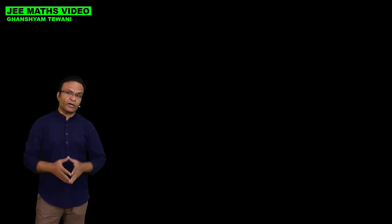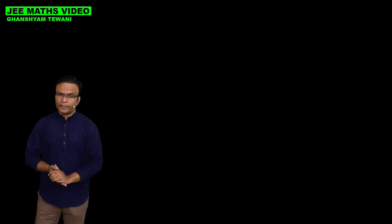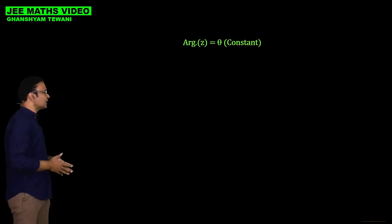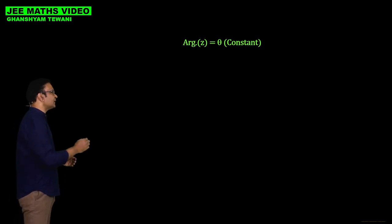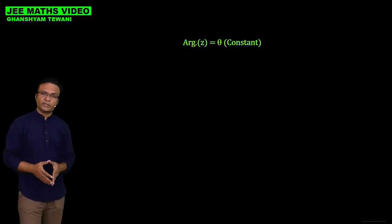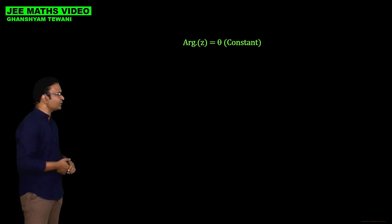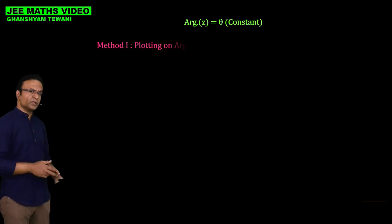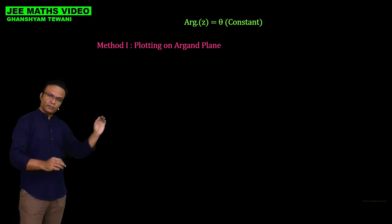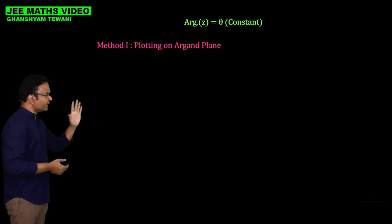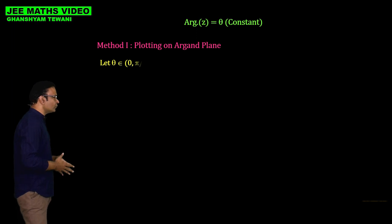We have already seen the argument of complex numbers in different quadrants. Let us start with one locus: the equation of the locus is argument of z equals theta, where theta is a constant. There are basically two methods to identify this locus. The first method is plotting on the Argand plane. For that, first assume that theta belongs to 0 to pi by 2, meaning z lies in the first quadrant.